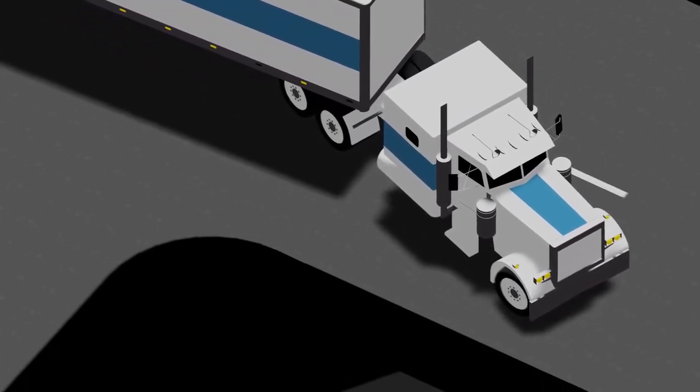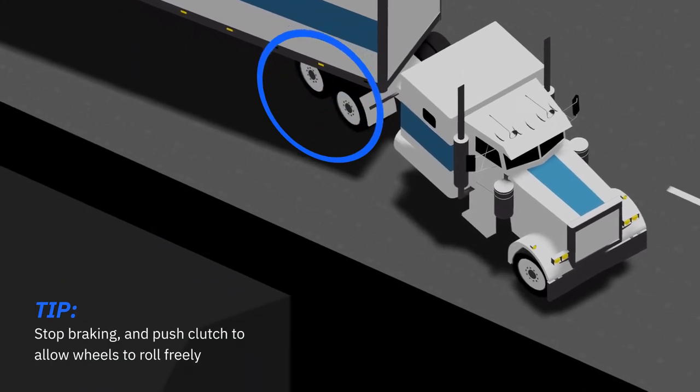If your tractor begins to jackknife, stop braking so that your drive wheels can roll freely and stop skidding.